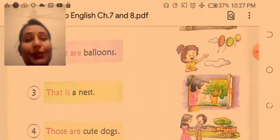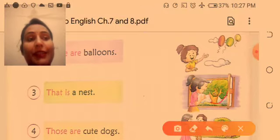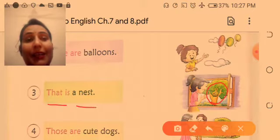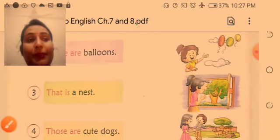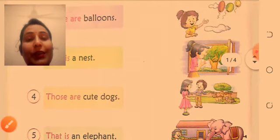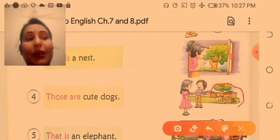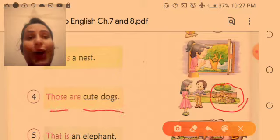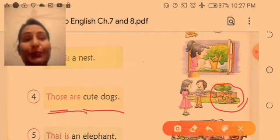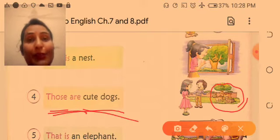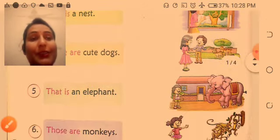Nest, only single nest is there, so that is a nest. Dogs, watch, dogs, more than one, so those are cute dogs. For more than one, those are is used. Those are cute dogs.